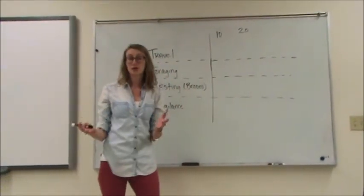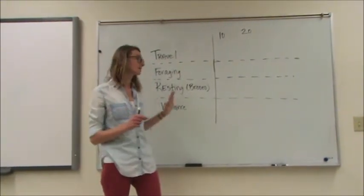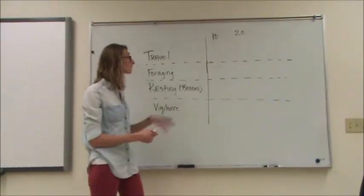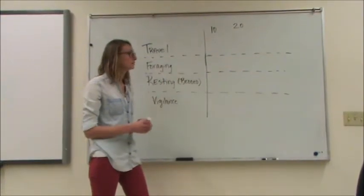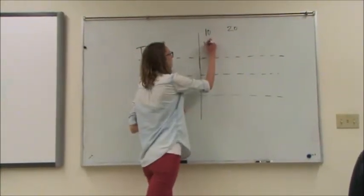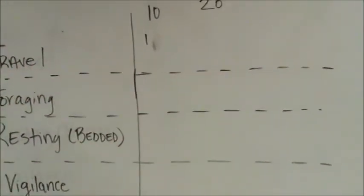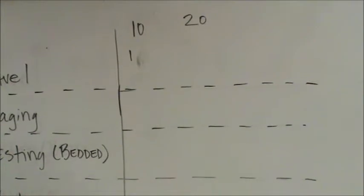One other way, if you want to get a little more specific, is actually time spent doing each behavior. So instead of frequency, 10 minutes in, say one is traveling, and we continue to watch that focal individual, and say they travel until 35 minutes in.